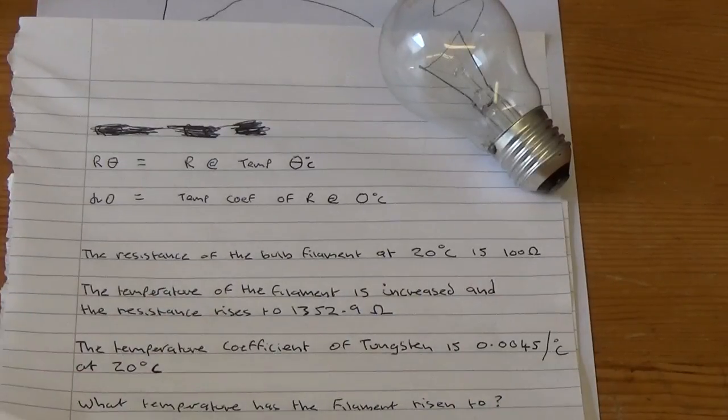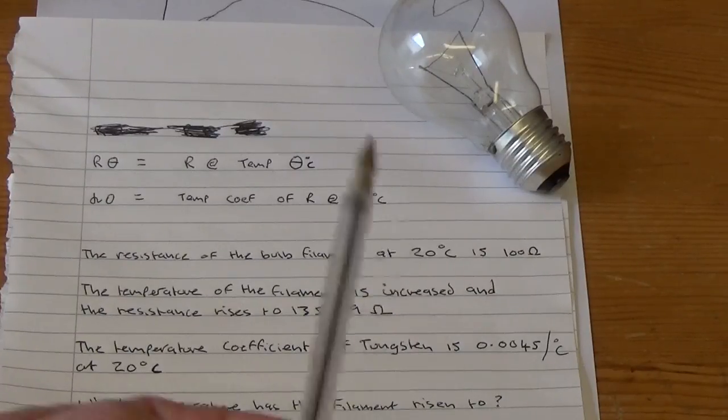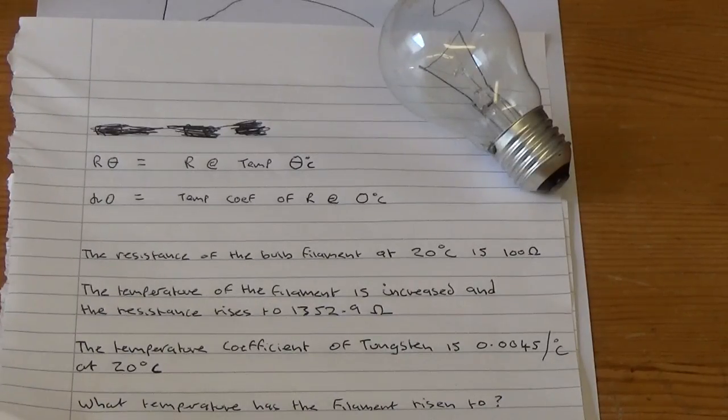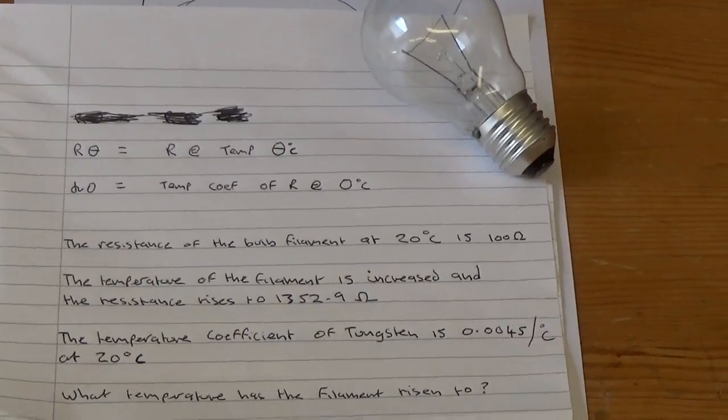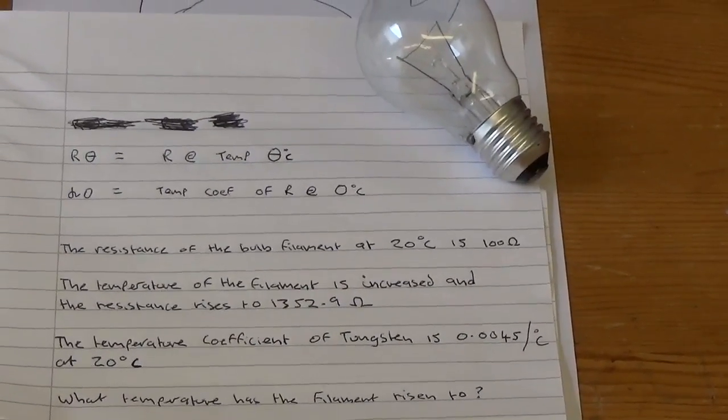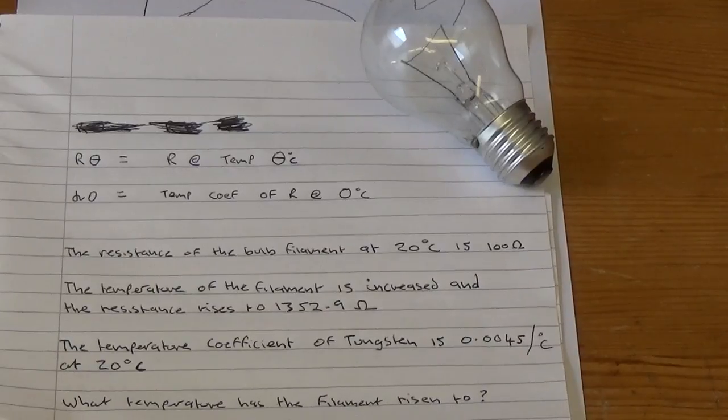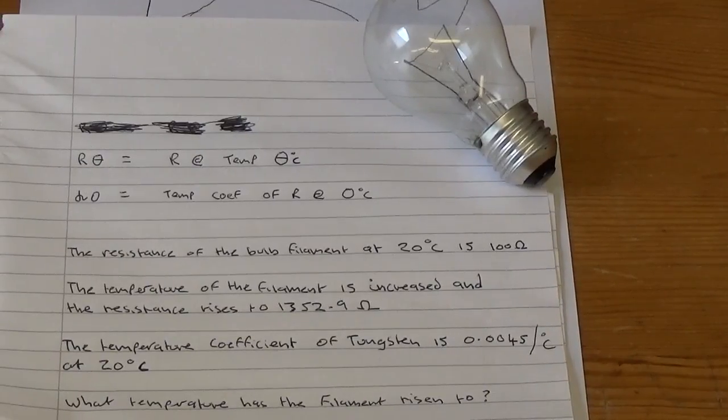So through these variables we can work out what the temperature of the filament is going to be when it's on and make more sense of the readings that Derek's actually calculating. Are you getting it? I hope so. Anyway, so let's get the actual calculation that we've done and take it from there.